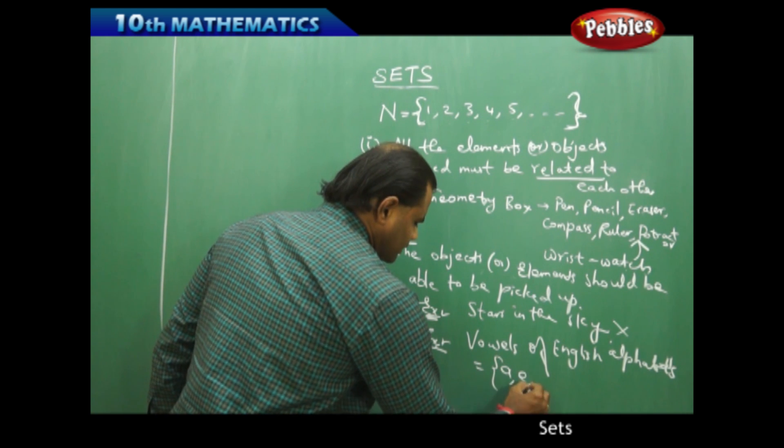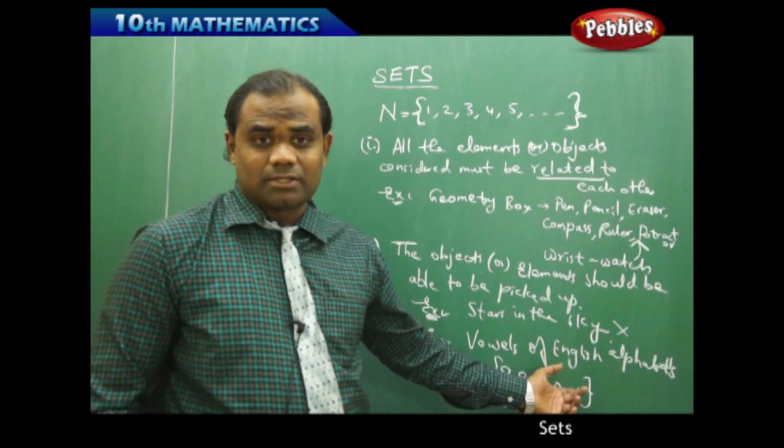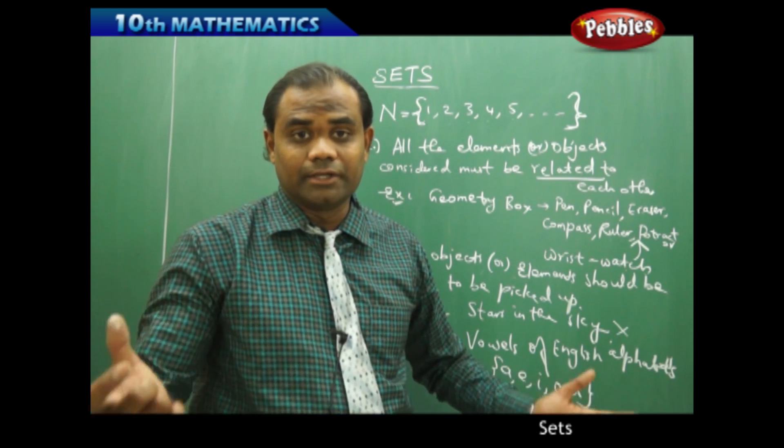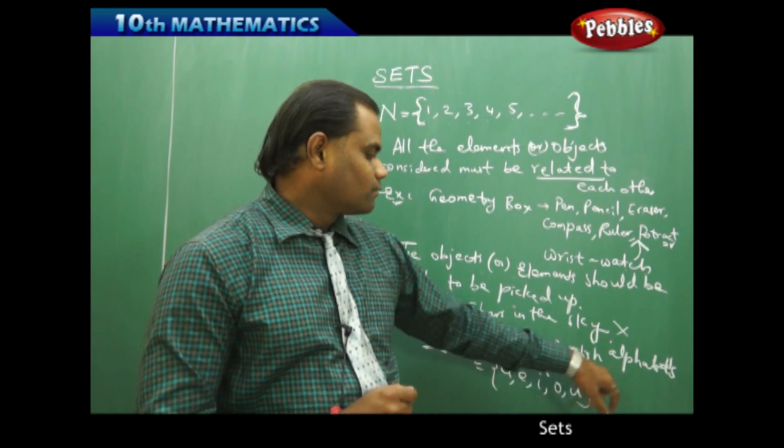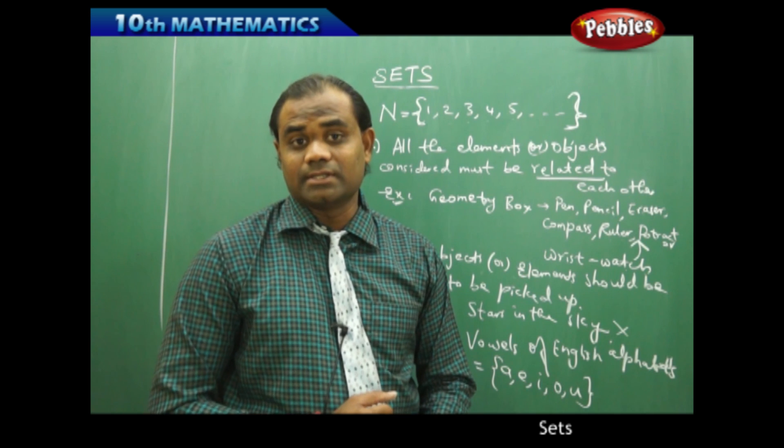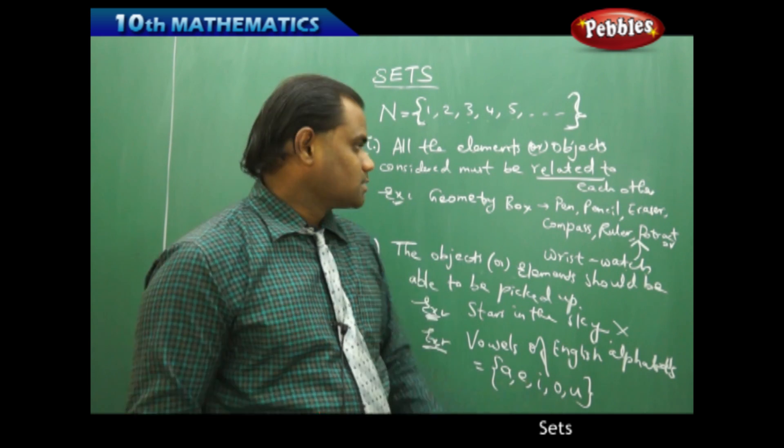So vowels of English alphabets, which are clearly A, E, I, O, U, is something which we already know in the English class. The vowels are A, E, I, O, U. This forms a set of vowels of English alphabets, the 26 letters starting from A to Z. So with this clear picture, it makes me understand that a set is a well defined collection of objects.